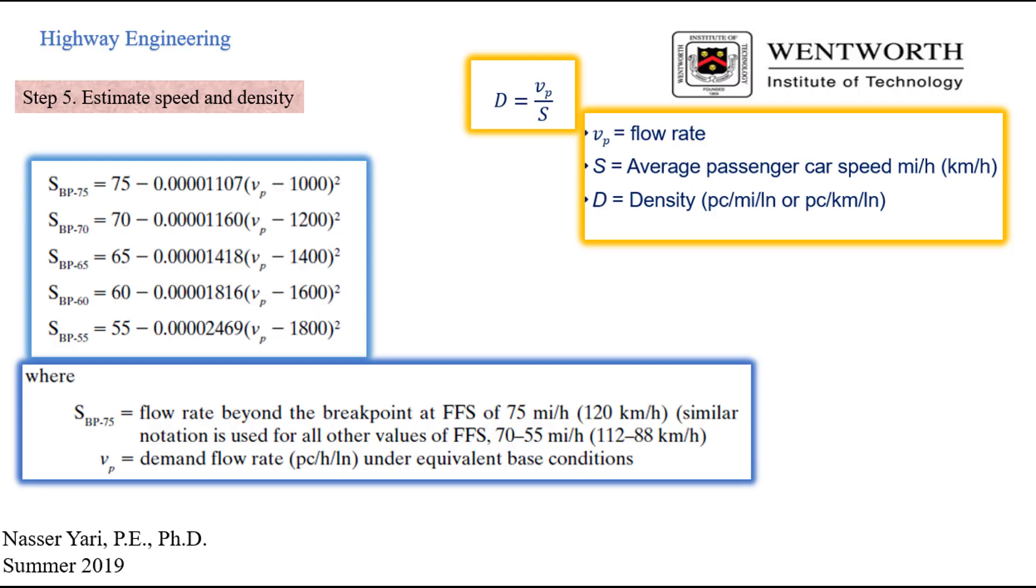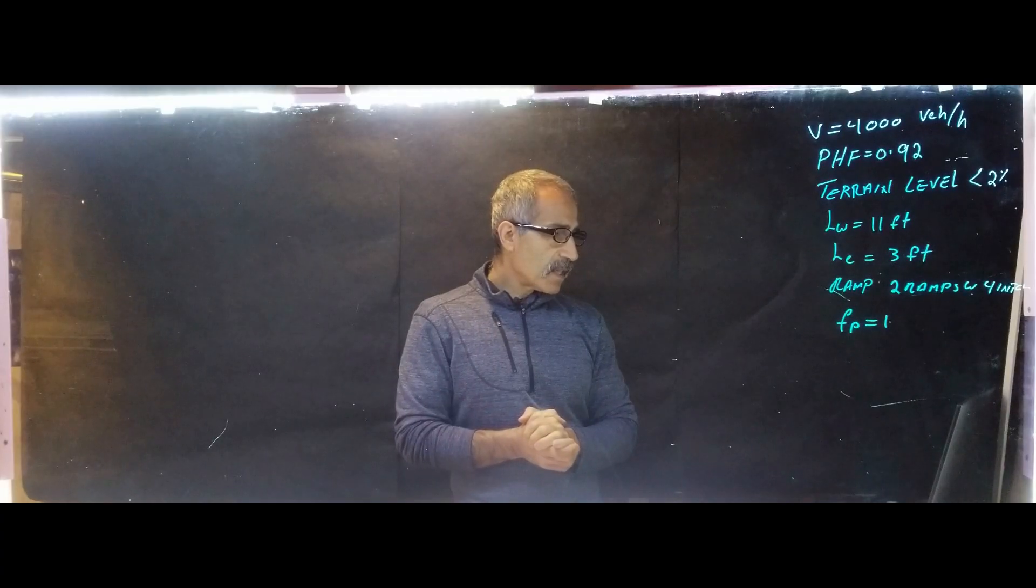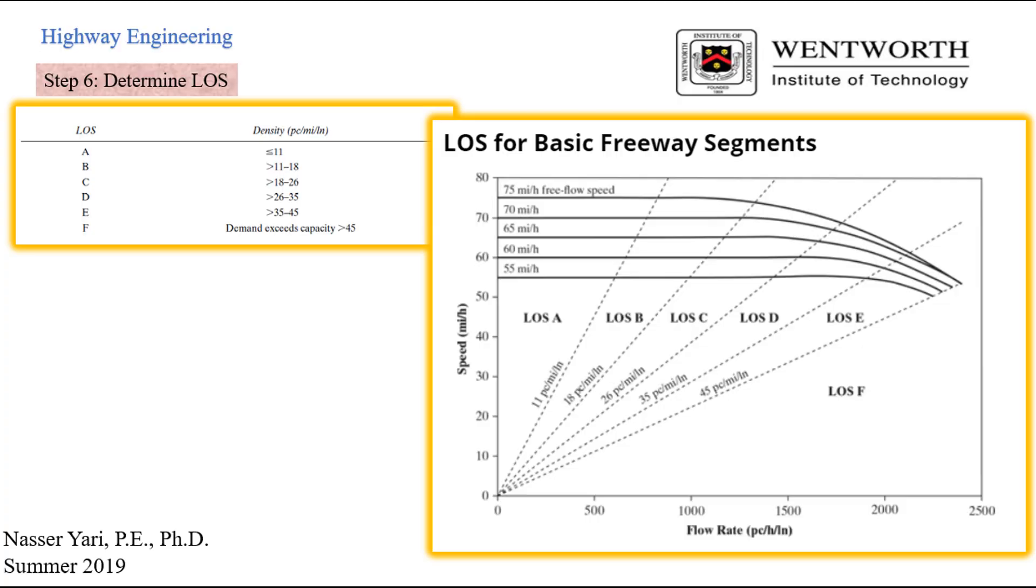And then finally, we're going to go to step number five, which we're going to adjust the speed. And then we calculate the density. And the adjusted speed is basically, when we had the, if we look, go back, look at the chart, it's beyond the breaking point. And based on what's on VP. Then we're going to calculate density, which is VP divided by average speed. And then once we have that, everything is easy. We can go ahead and calculate the level of service.